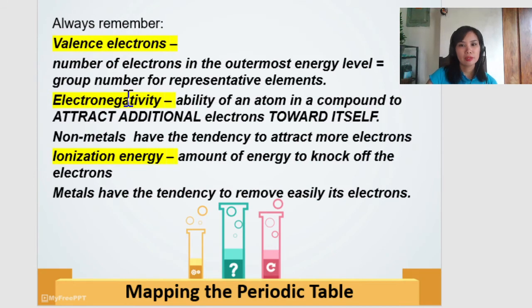Next, we have here, let's remember the terms. Again, valence electrons, these are the number of electrons in the outermost energy level. Electronegativity, or by the way, valence electrons, this is the group number of each representative elements. Electronegativity, this is the ability of an atom to attract additional electrons toward itself. Well, the ionization energy, it is the amount of energy to knock off the electrons. Metals have the tendency to remove easily its electrons.